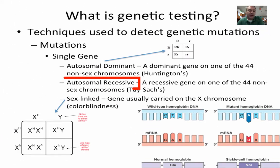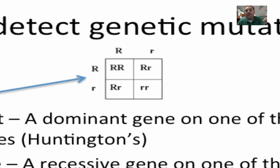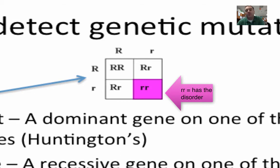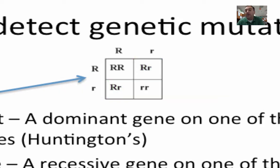In an autosomal recessive disorder — remember, an autosome is a non-sex chromosome, one of the first 22 chromosomes — you'd have to have two copies of the bad allele to have the disease. So in this Punnett square, individuals with two little R's have the genetic disease. Heterozygous individuals are carriers: they carry the trait and can pass it on, but are not affected by the disease.